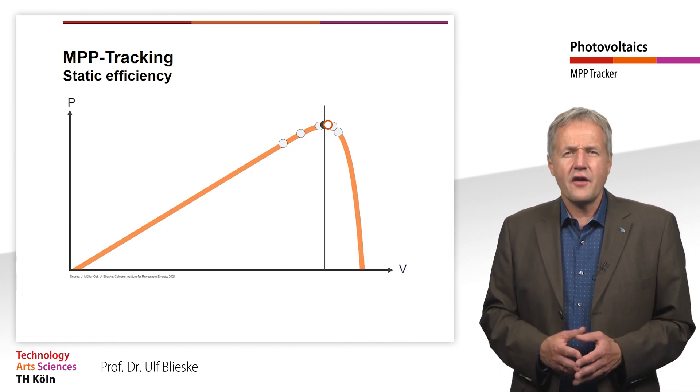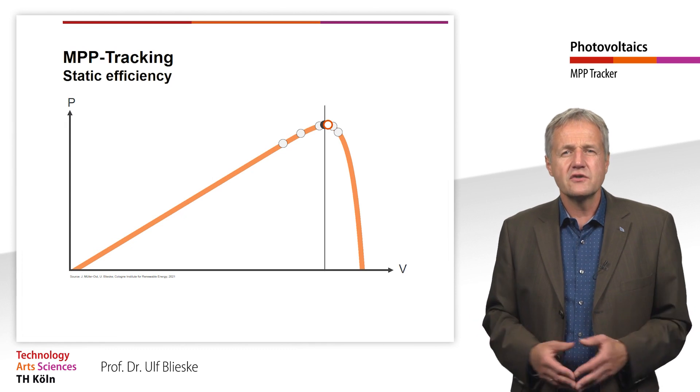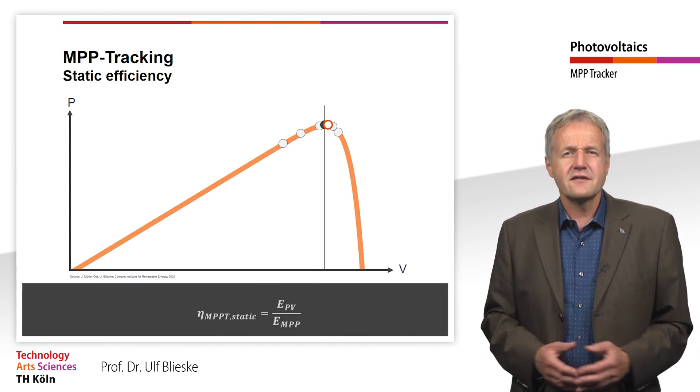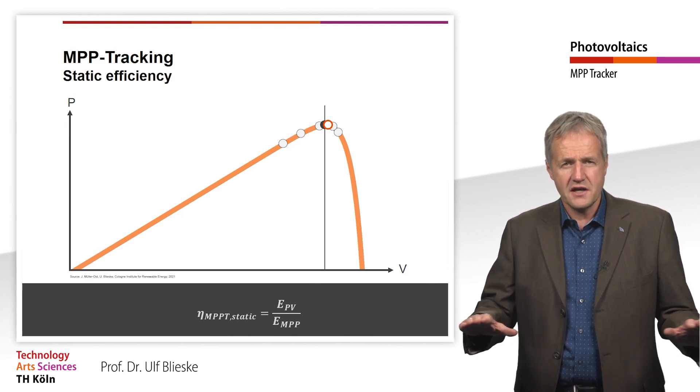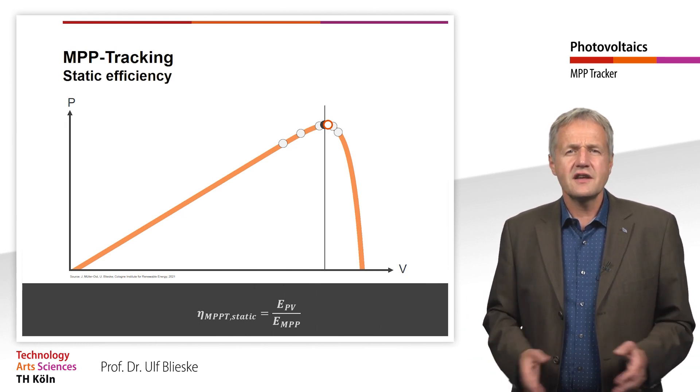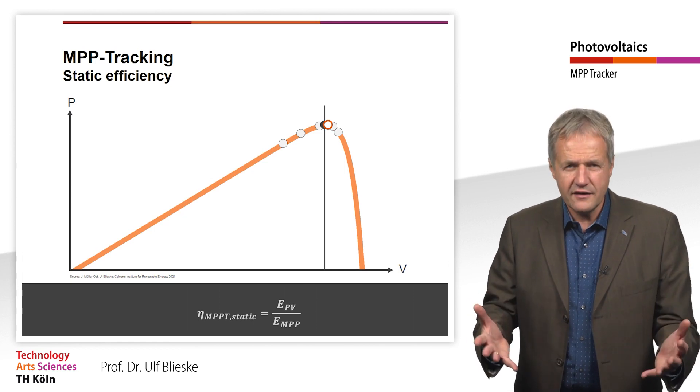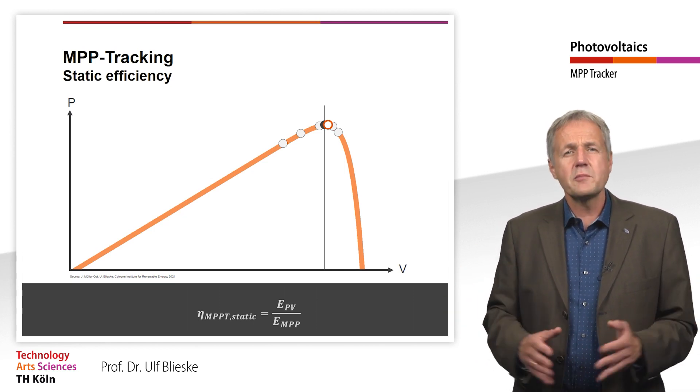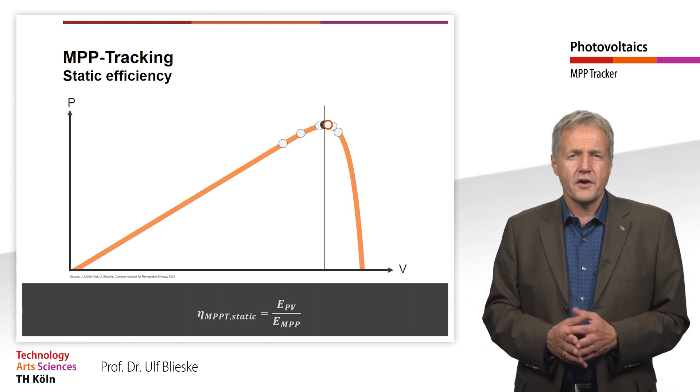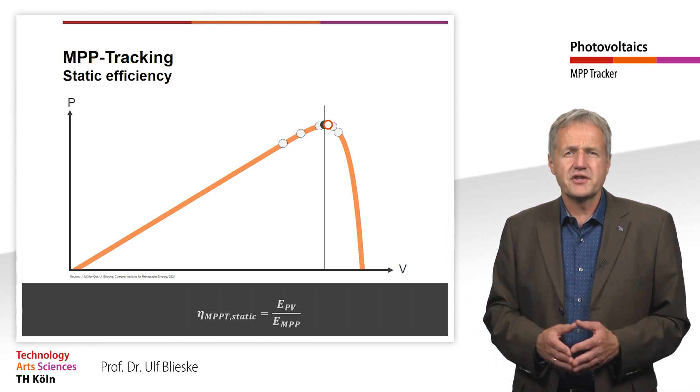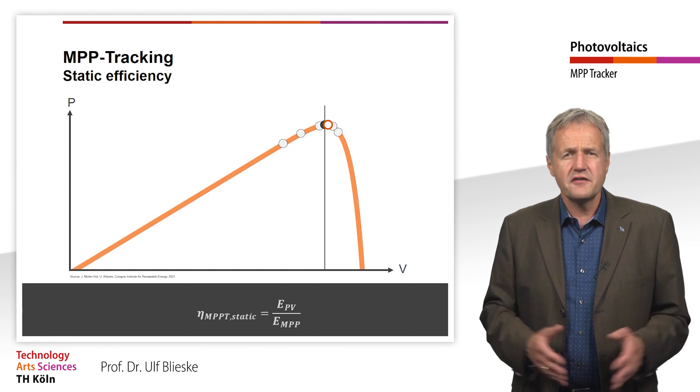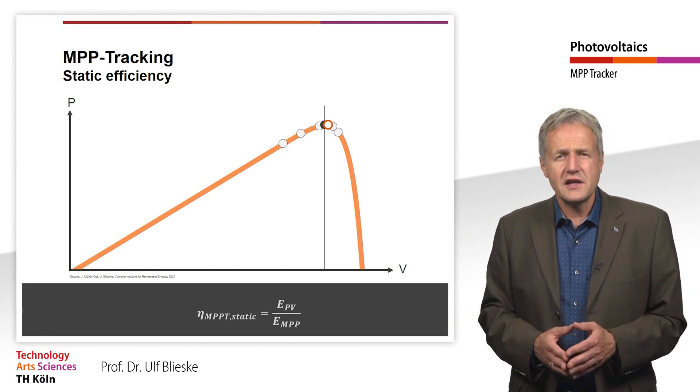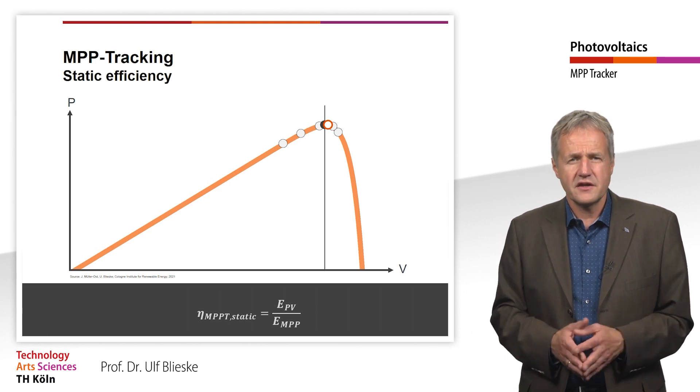The accuracy of the MPP tracker can be measured using the static efficiency. Static here means that the ambient conditions do not change. This efficiency is defined as the ratio of the energy at the actual operating point to the energy at the operating point with maximum power. Good MPP trackers achieve a static efficiency of over 99%. Very good controllers even reach 99.8%.